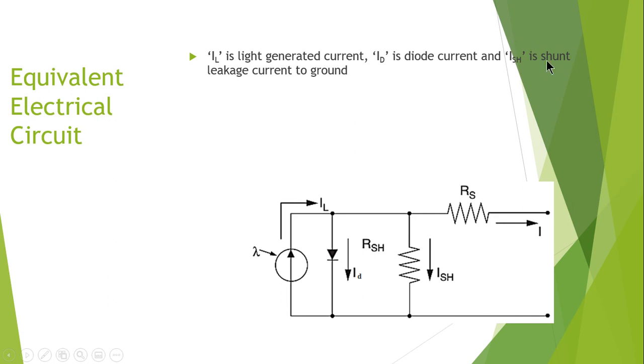The next is the shunt leakage current. In any electrical installation, some current has the capability of flowing through the protective ground conductor to ground. In this case, it will be flowing through the shunt resistance, which is why it is named ISH or I shunt.